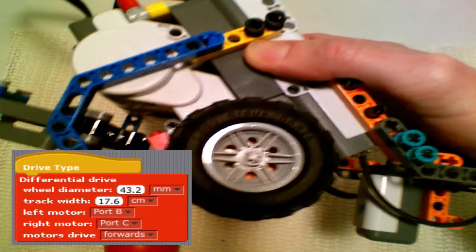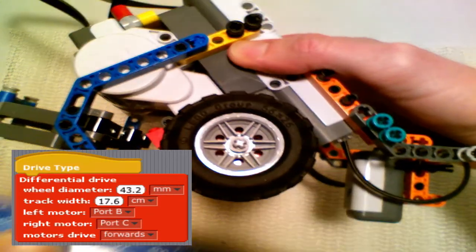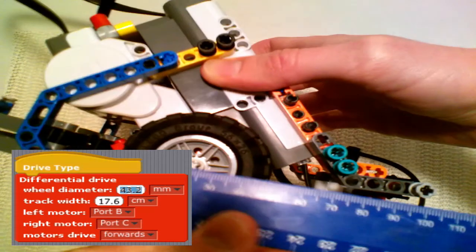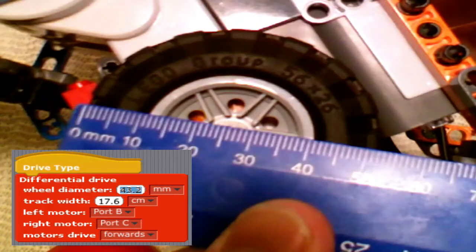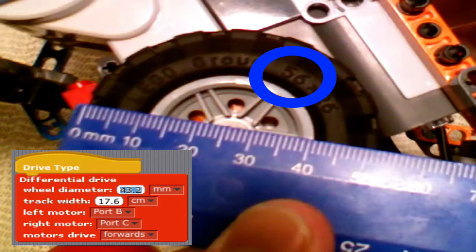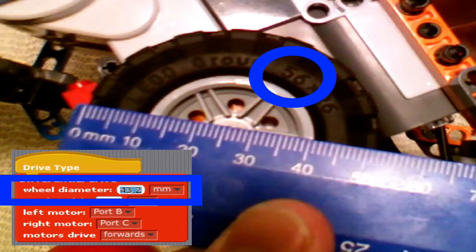To find the wheel diameter I could take a ruler and just measure the distance across the wheel, its diameter, or helpfully LEGO has it written across on every wheel. The first number is the diameter in millimeters and the second number is the width of the wheel in millimeters, which we don't need to know. The diameter of this wheel is 56 millimeters.